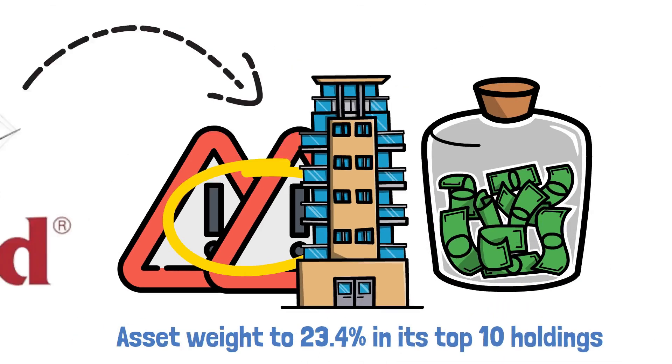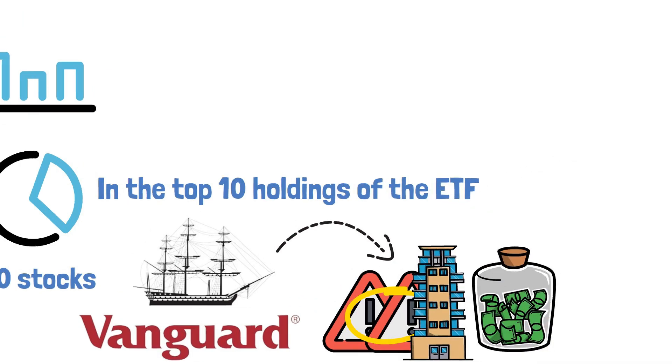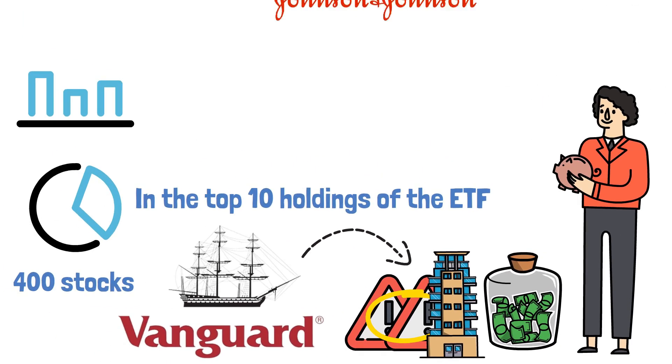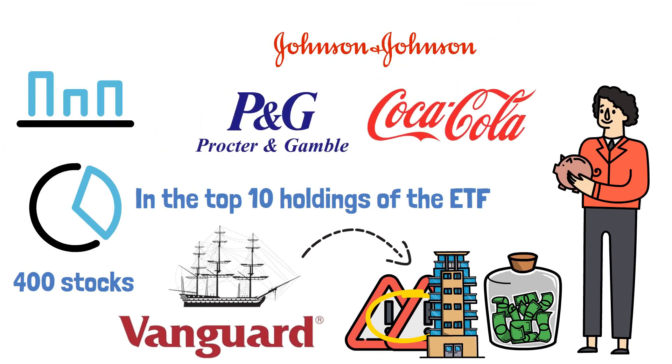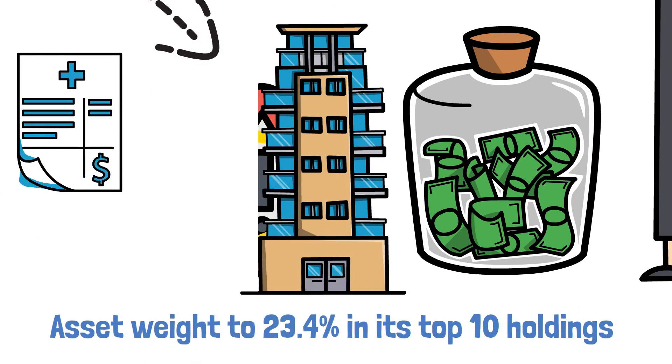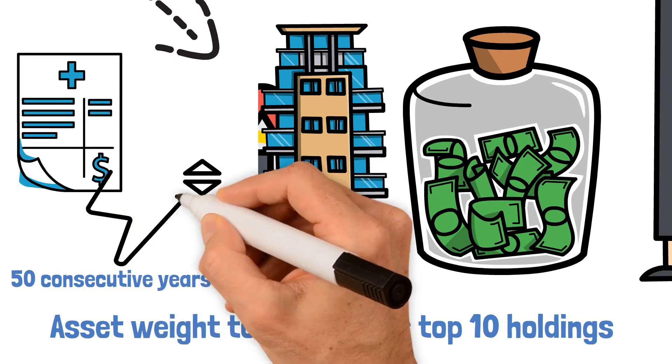Moreover, in the top 10 holdings of the ETF, investors can find several esteemed dividend kings including Johnson & Johnson, Procter & Gamble, and Coca-Cola. These companies have an impressive track record of increasing dividends over 50 consecutive years, which bodes well for the ETF's continued dividend growth.